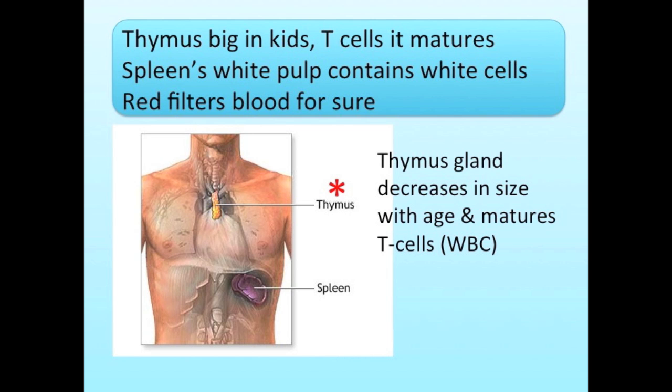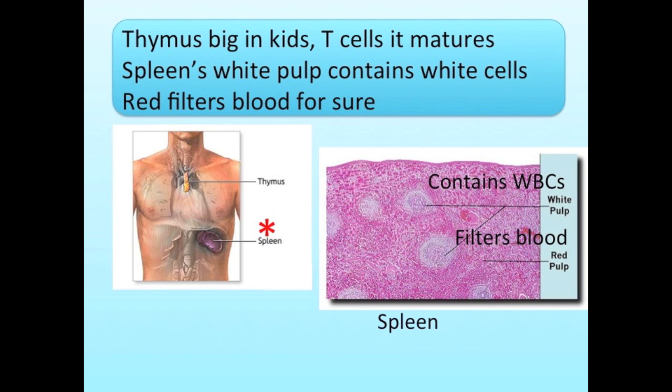The thymus is where immature T-cells mature. The spleen's white pulp contains white blood cells, while the red pulp filters the blood.